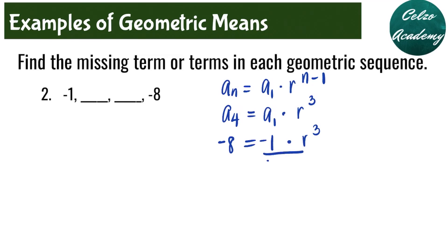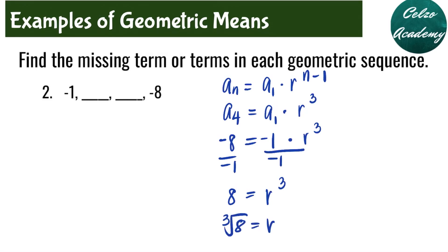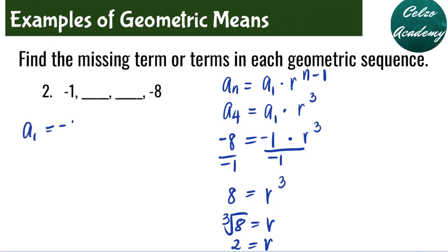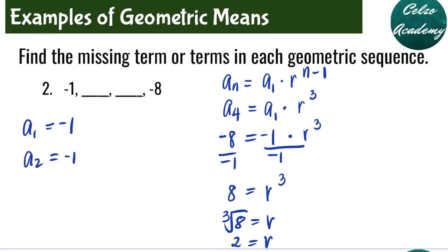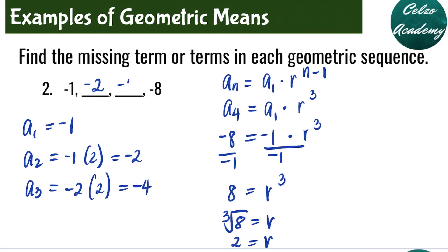Now we need to divide both sides by negative 1, giving us positive 8 is equal to r to the third power. Solving for r, we need to get the cube root of 8, and the cube root of 8 is 2. Our first term is negative 1, so the second term is negative 1 times 2, which is negative 2. For the third term, we multiply negative 2 by the common ratio 2, giving negative 4. Then negative 4 times 2 gives negative 8. So the two geometric means between negative 1 and negative 8 are negative 2 and negative 4.